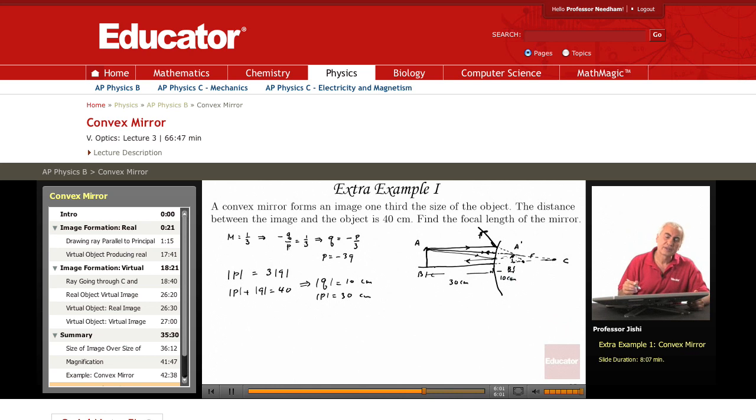I want the focal length. I have one over F is one over P plus one over Q. The object is real here, so P is 30 plus one over Q. The image is virtual, so Q is minus 10. As you see here from here, Q is minus P over three, so it's minus 30 over three. So Q is minus 10.